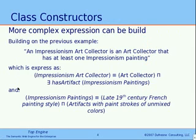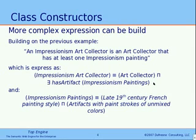For example, we looked at the definition of the Impressionist art collector, being defined as the intersection between art collector and all of the individuals that have at least one artifact of type Impressionist painting. And in turn, the Impressionist painting class is defined as the intersection of late 19th century French painting style class and artifacts with paint stroke of unmixed color.